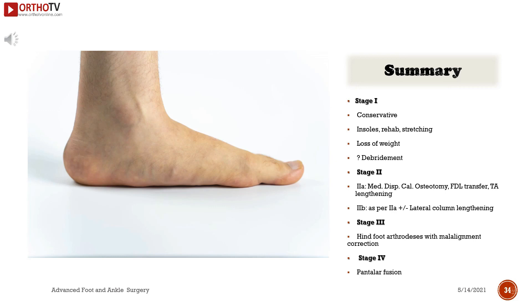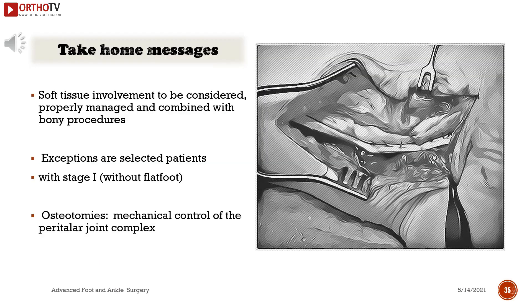An alternative option for stage 4 is triple fusion plus total ankle replacement in selected patients. Summary by stage: Stage 1 — conservative: insoles, rehabilitation, stretching, weight loss, debridement. Stage 2a — medial displacement calcaneal osteotomy, flexor digitorum longus transfer, tibialis anterior lengthening. Stage 2b — as per 2a plus lateral column lengthening. Stage 3 — hindfoot arthrodesis with malalignment correction or triple arthrodesis. Stage 4 — pantalofusion.